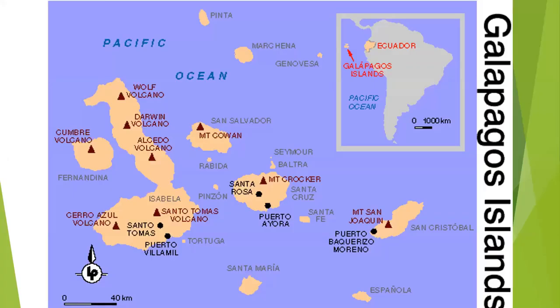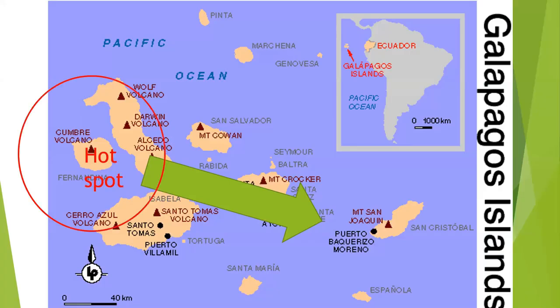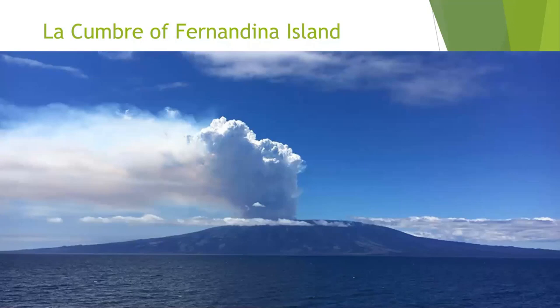Going to the Galapagos, you can see that they are on an oceanic plate, but that plate is moving to the east. The island of Fernandina, where you have the Cumbre volcano, is presently on the hot spot, whereas San Cristobal and Española have been pulled away from the hot spot over the last 4 to 5 million years. So they're the older volcanoes. La Cumbre of Fernandina Island is active.